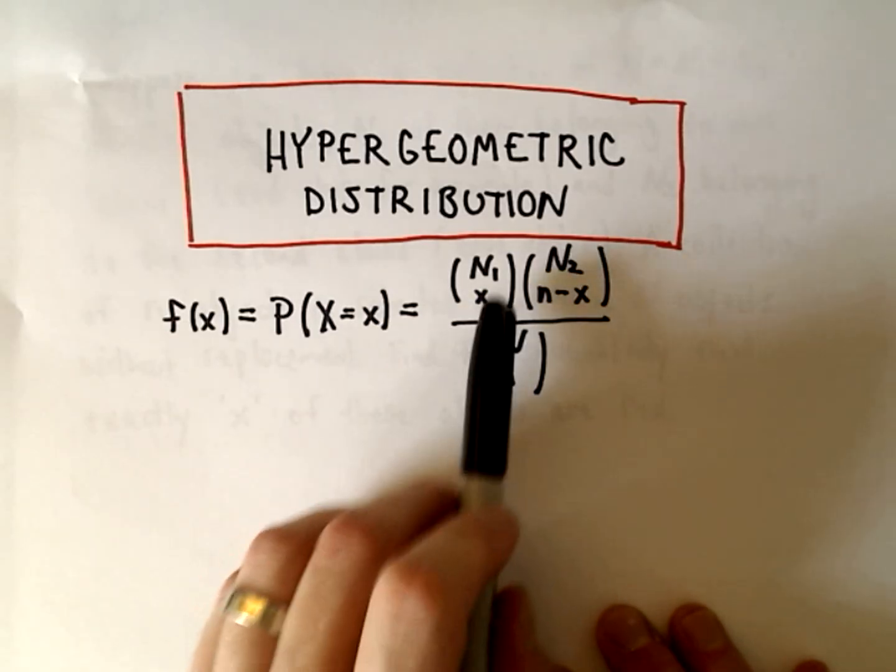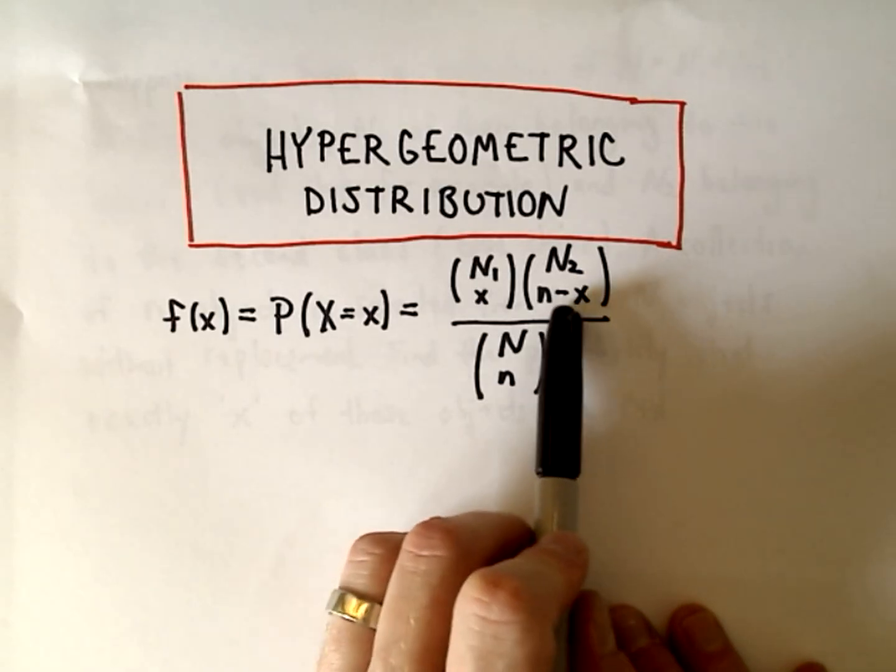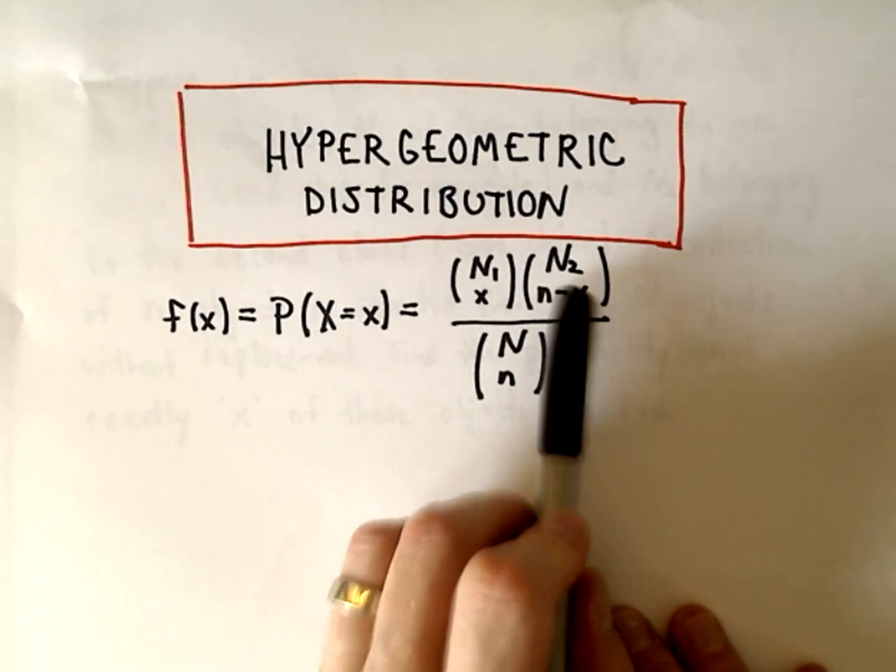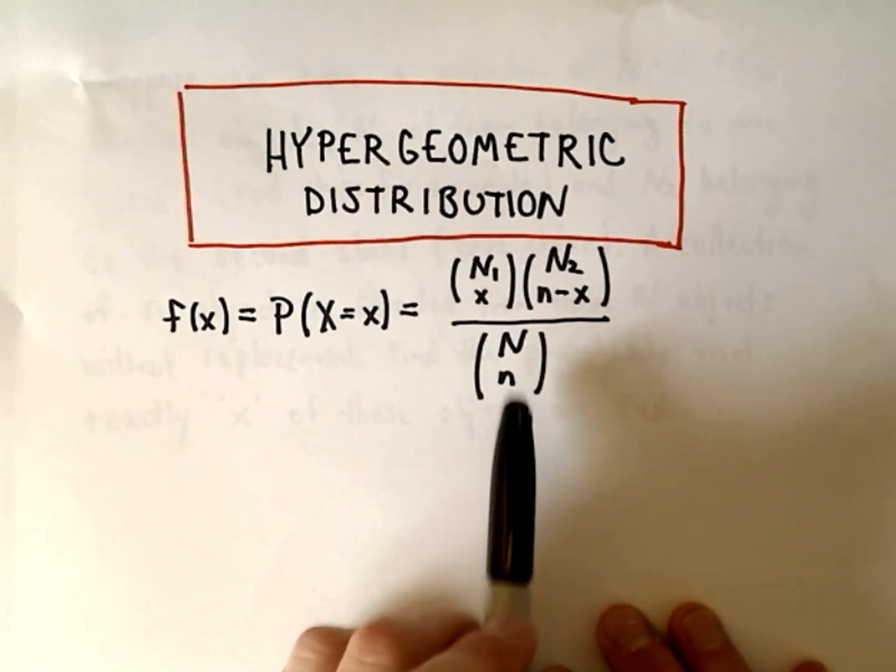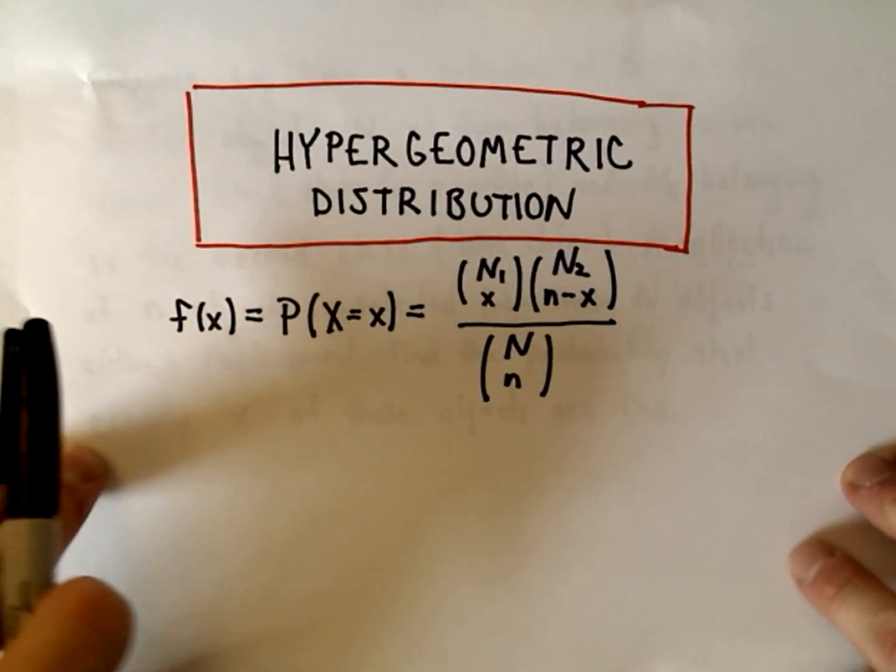What we're going to do is we're going to use capital N sub 1 choose x, multiply that by capital N sub 2 choose n minus x, and divide that by capital N choose little n. Of course this formula makes no sense without any context.